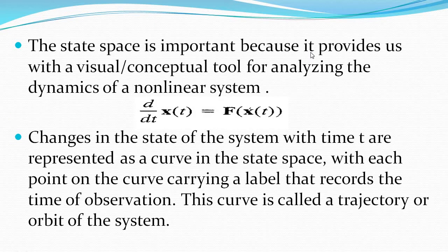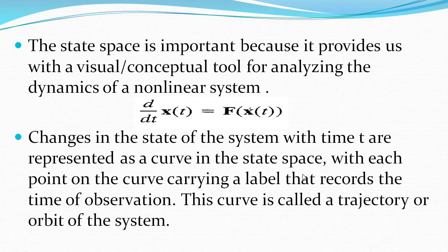State space is important because it provides a visual conceptual tool for analyzing the dynamics of a non-linear system — a visible representation of the neuro-dynamical system. Changes in the state of the system with time are represented as a curve in the state space, with each point on the curve carrying a label that records the time of observation. This curve is called the trajectory or orbit of the system.